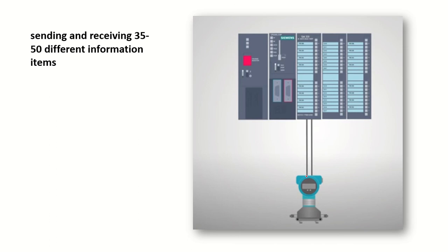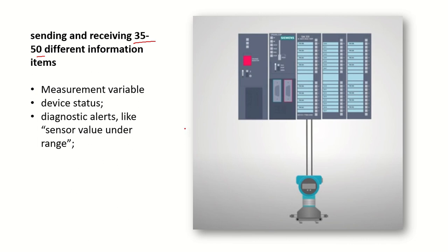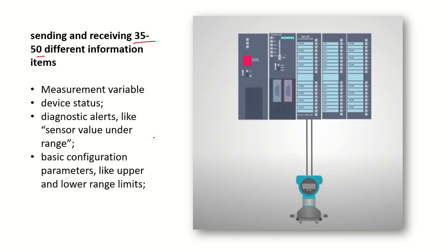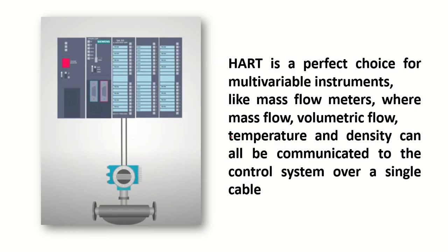Along with the analog signal, around 35 to 50 different pieces of information can be sent. These include the measurement variable, device status (whether the device is on or off), diagnostic alerts such as whether the sensor value is in range or exceeding range, and basic configuration parameters like upper limit, lower limit, and tag name of the device. HART is also multi-variable: for example, a HART flow meter can communicate mass flow rate, volumetric flow rate, temperature, and density — all over a single communication loop.